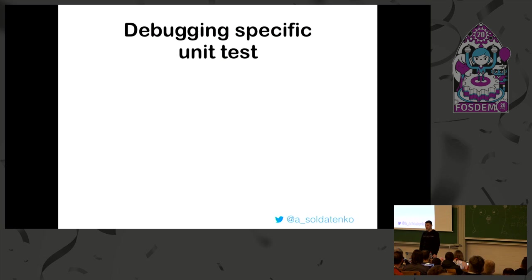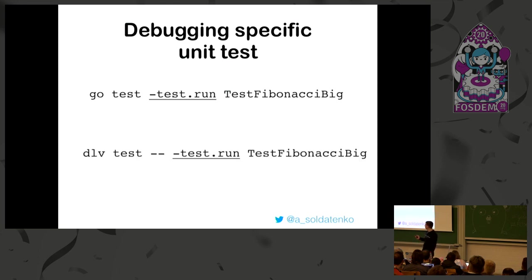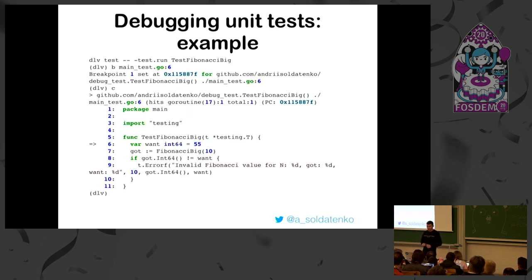The second variant is to debug a specific unit test. It's also very easy, and I like the API which Delve provides - it's an absolute mirror of what Go tests provide. You can just run 'go test' with a test name, and the same you can do with Delve, just with double slashes. It's really awesome. If you run it, you will see that the debugger stops on the first line of the test, and you can jump using next, step, et cetera.